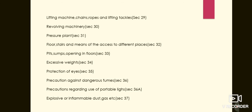Next, revolving machinery is covered in session 30. Where the process of grinding is carried out, there shall be a notice indicating the maximum safe working peripheral speed of every grindstone or abrasive wheel, the speed of the shaft or spindle upon which the wheel is mounted, and the diameter of the pulley necessary to secure such safe working peripheral speed.